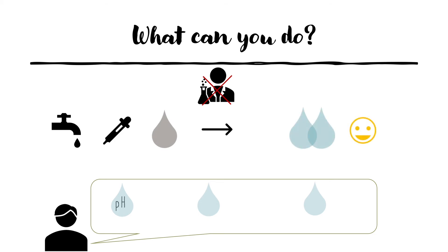We can also take action by testing the water quality of sources in schools or nearby, by purchasing water testing kits to test pH, hardness, and the presence of harmful chemicals. Sharing the results can help spread awareness about it too. There's still a lot we can do for this issue, especially raising awareness of the importance of sanitation among people and helping them get access to clean water. Fortunately, the situation regarding clean water is slowly improving over time.